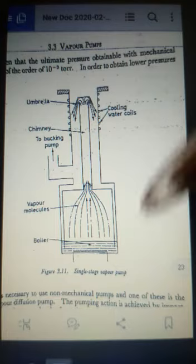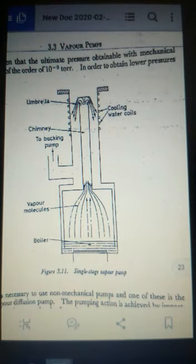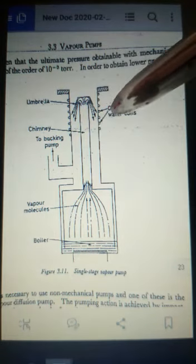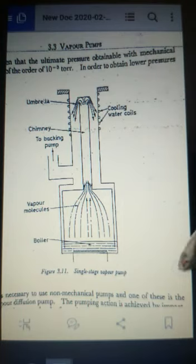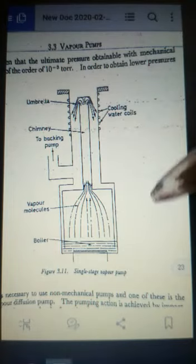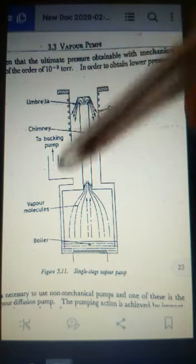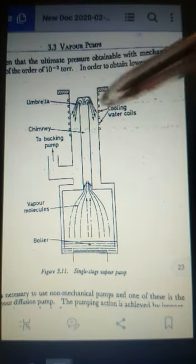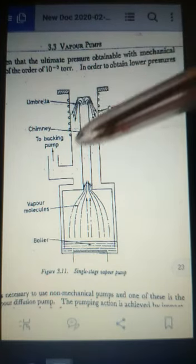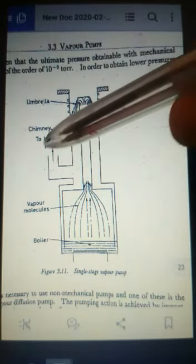The vapor molecules from the boiling fluid travel up in a high speed stream. The gas molecules which enter through the vapor stream gain considerable downward momentum as a result of collision and are swept towards the exhaust. The vapor essentially collides with the cool wall, then condenses to liquid and flows back to the boiler. But the efficiency is very low when we use only one jet.